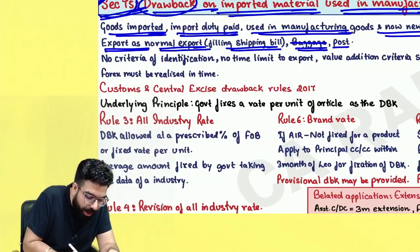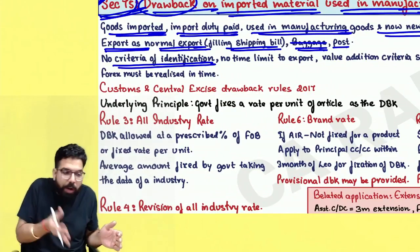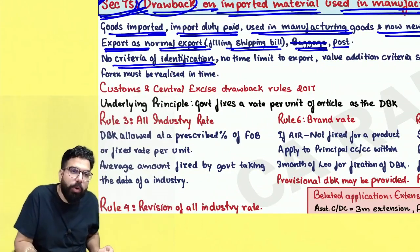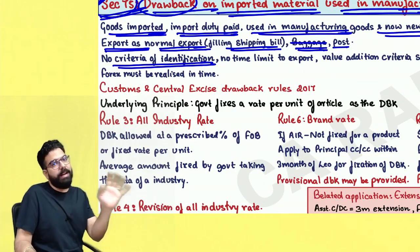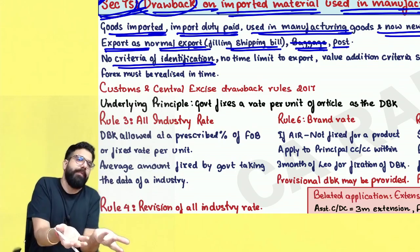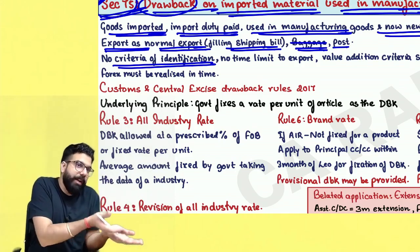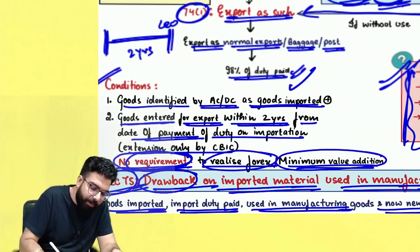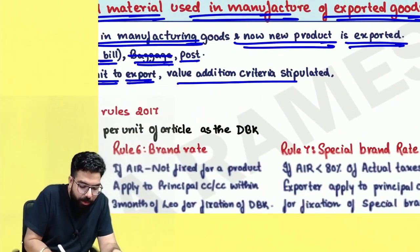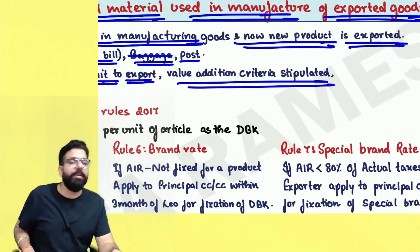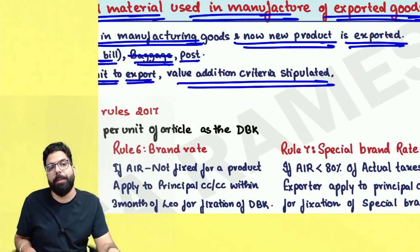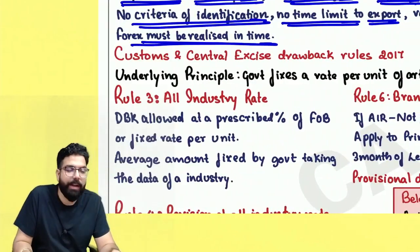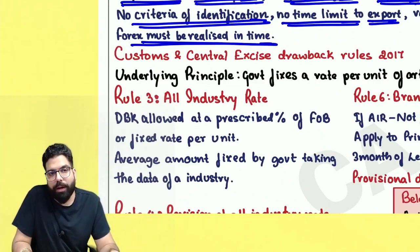Under section 75, there is no identification criteria because AC/DC cannot identify the final product from the imported raw material — they are definitely very different. There is no time limit to export under section 75 (unlike section 74 which has a 2-year limit). However, value addition criteria is stipulated — you must exceed it to get duty drawback. Foreign exchange realization is also mandatory as per FEMA time limits.